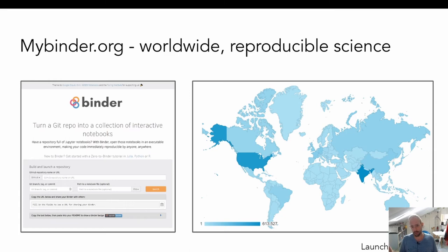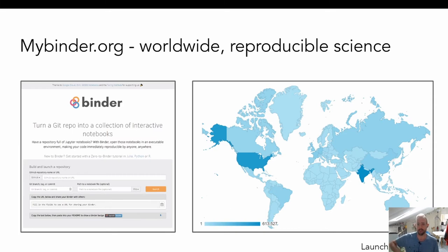Another interesting example is the Binder project — a really large open public service that a few of us in the Jupyter project run, focused on interactive, reproducible, and shareable environments. The most important thing I want to highlight is a map of launches on mybinder.org over 2020. Basically there are launches happening from every single country in the entire world. Cloud infrastructure means you don't need to buy a $2,000 laptop to run interesting data science work — you can just go to mybinder.org and have access to a much wider range of infrastructure. This technology has a lot of potential for growing the ability for a more diverse population of people to leverage this infrastructure.